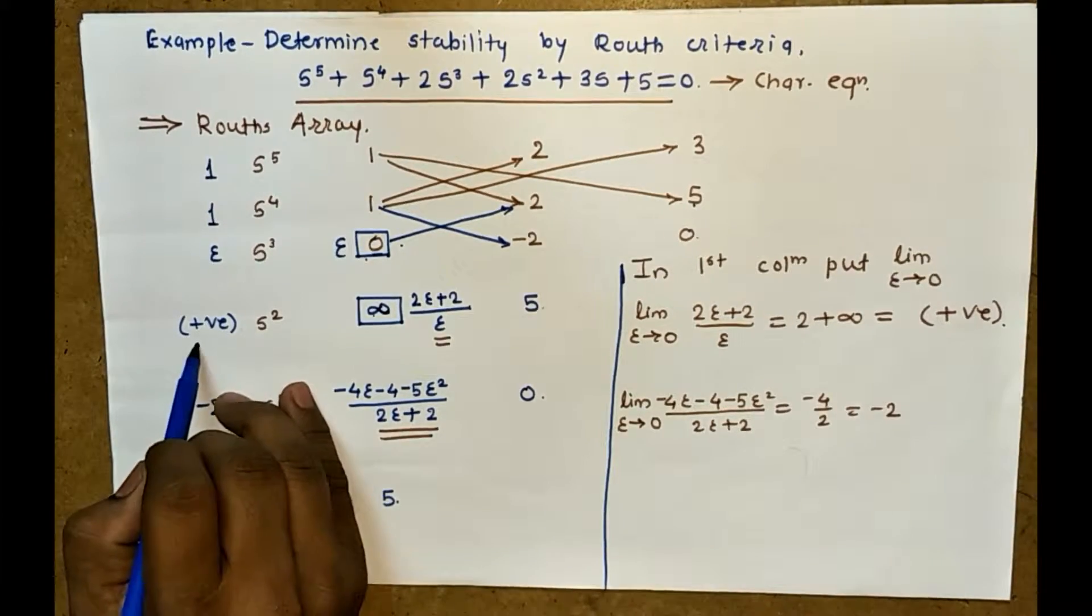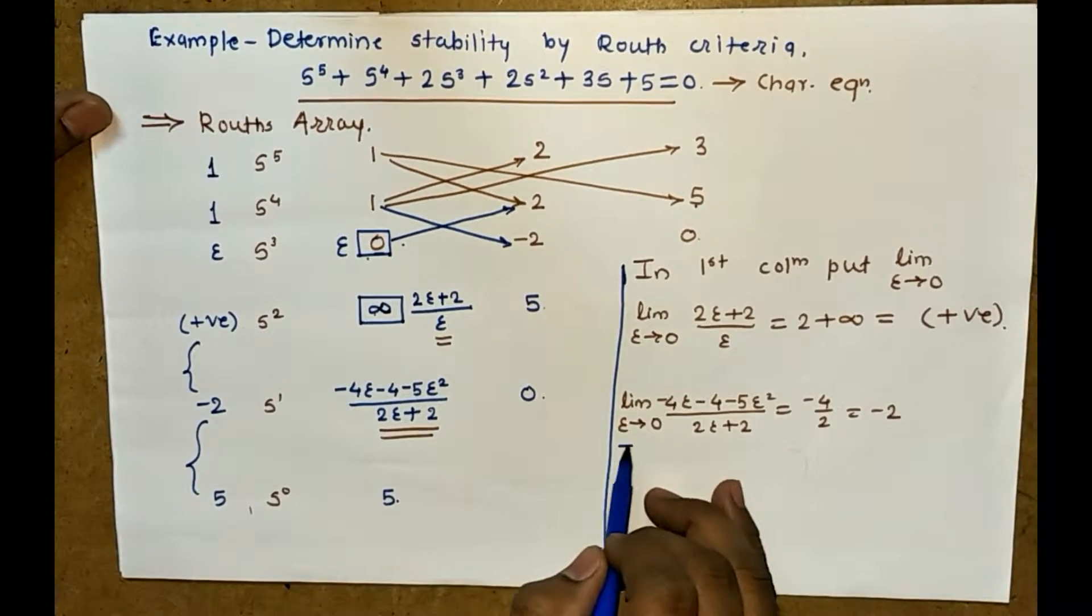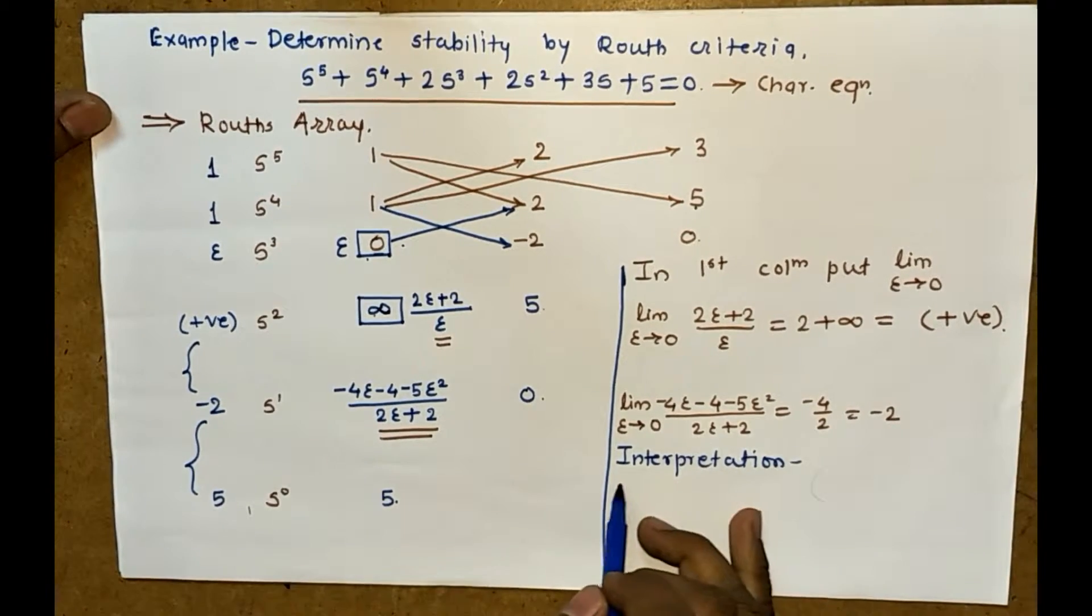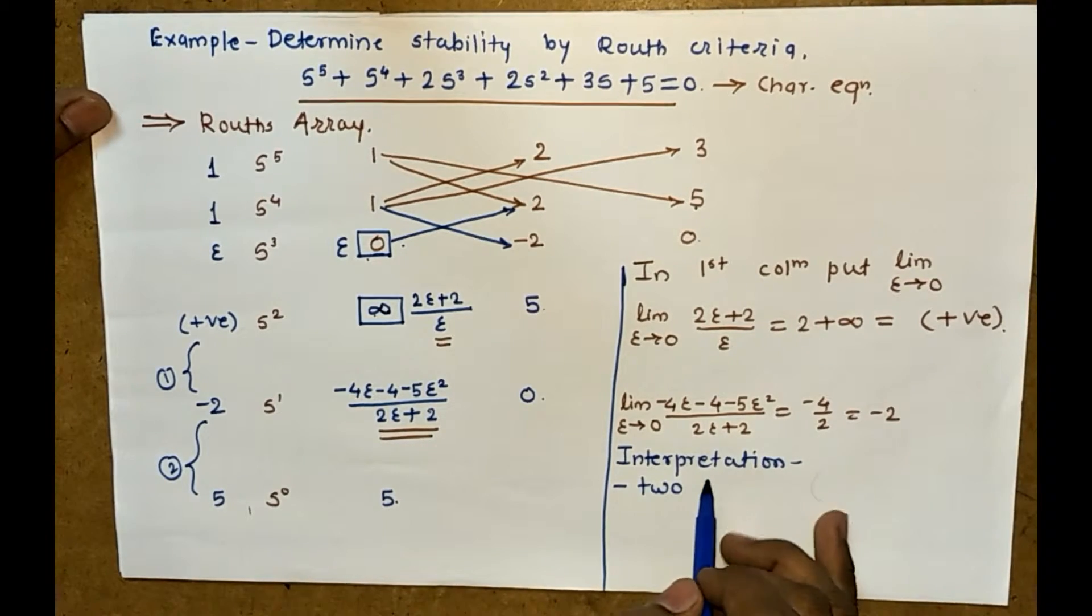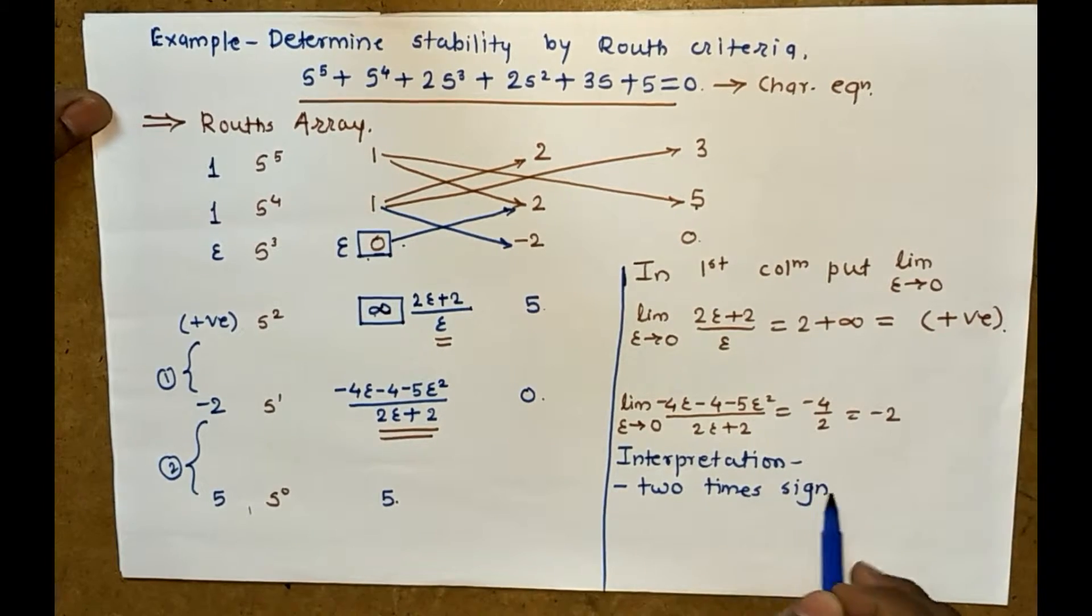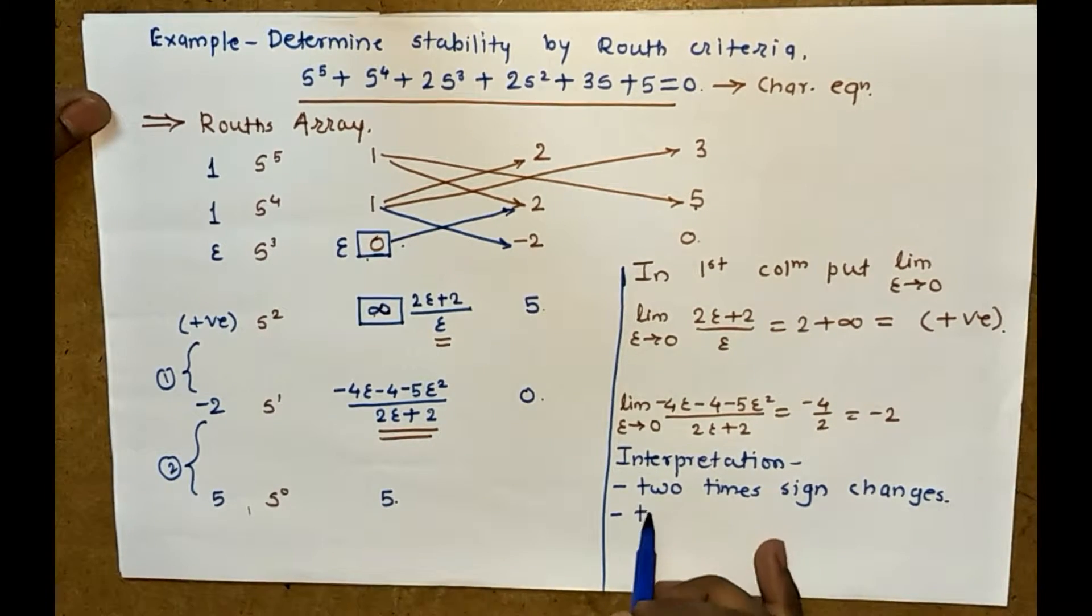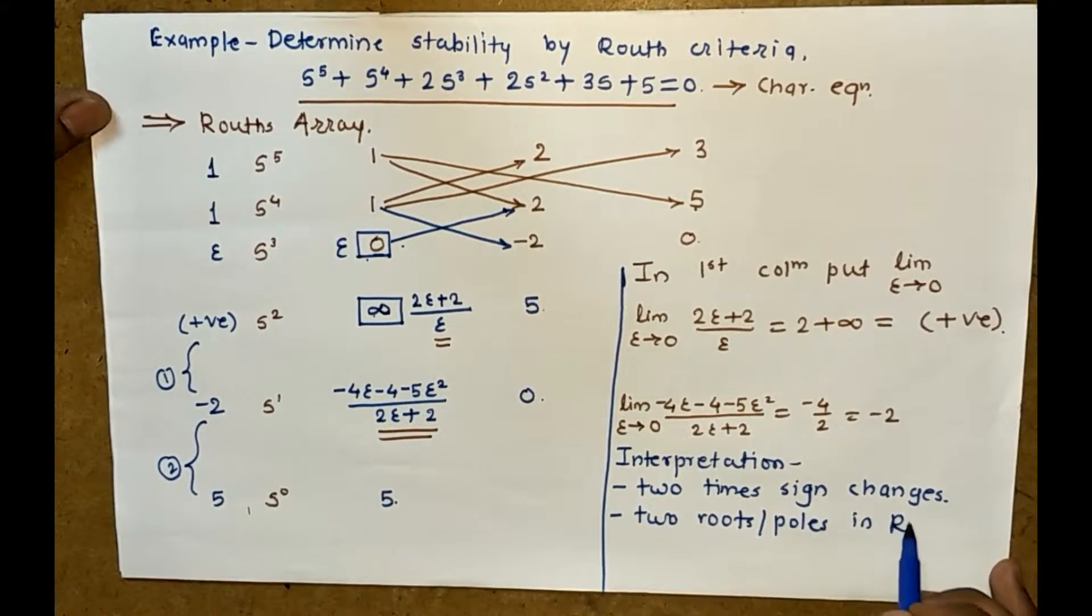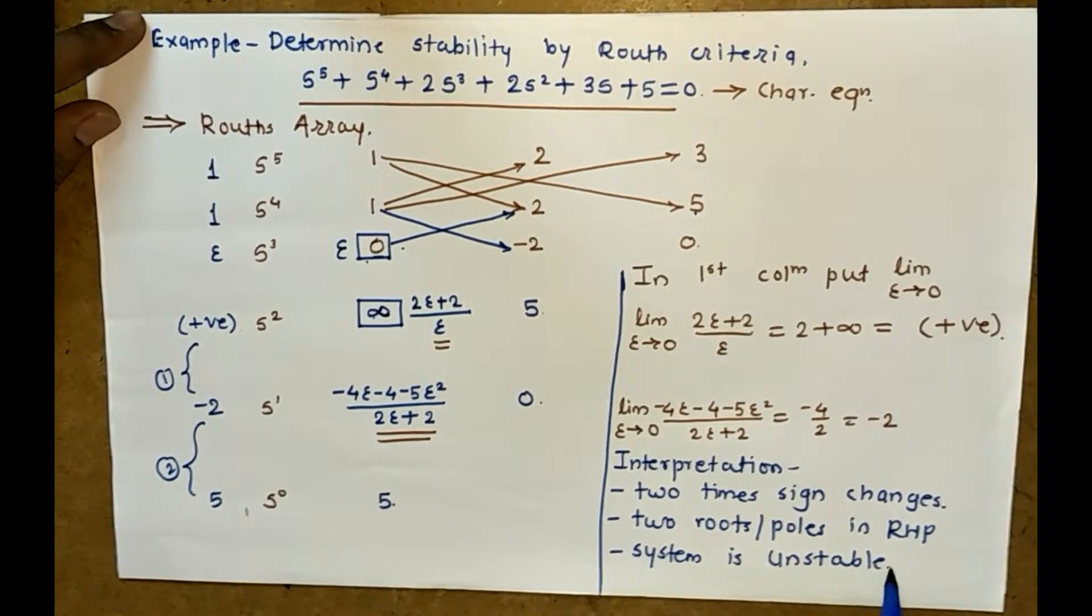Now if you look at the first column of Routh array, here 1 time sign change, here 2 times sign change. So 2 times sign change means there are 2 roots in the right hand plane of the s-plane. The system is unstable. This is the special case for Routh-Hurwitz criteria.